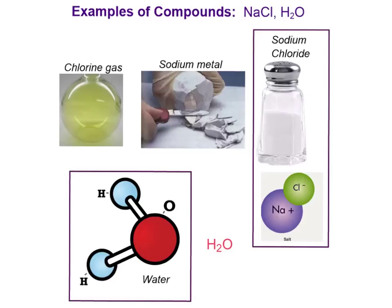Sodium chloride is another compound — that is table salt. Sodium chloride comes from two different elements, and in every sodium chloride compound there is always one sodium atom and one chlorine atom. Individually, chlorine gas and sodium metal are elements, but when combined in a one-to-one fixed proportion, we get sodium chloride, which looks very different from these individual elements.